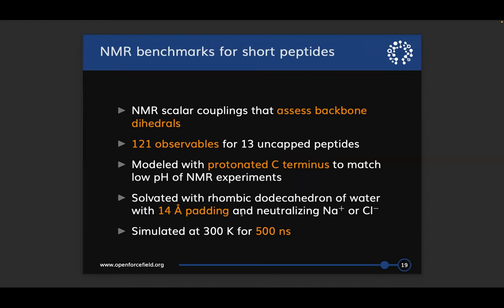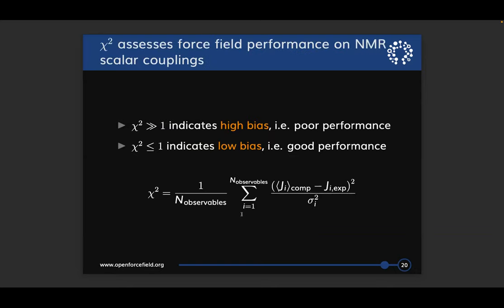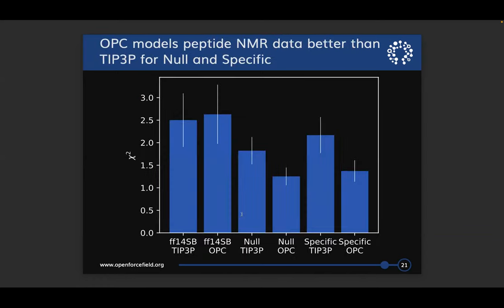I'll show you data on about 121 observables from 13 uncapped peptides, assessing backbone dihedrals. These have a protonated C-terminus to model the low pH in the NMR experiments, and I simulate them with neutralizing counter ions at 300 Kelvin for 500 nanoseconds. To assess performance, I use a chi-squared value — essentially a mean squared error weighted by the experimental uncertainty in the measured scalar coupling — where values much bigger than 1 indicate poor estimation of the observable, and values less than or equal to 1 indicate good performance.